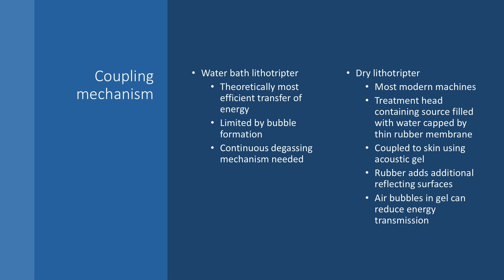There are two main types of coupling mechanism. Earlier lithotriptors, such as the EHL model Dornier HM3, relied on a water bath coupling mechanism. This is theoretically the most efficient type of coupling, as the shockwave is generated and conducted by the water directly to the patient's skin, resulting in transmission of almost all the energy into the patient. However, the energy is limited by bubble formation within the water bath, and therefore this kind of lithotriptor had a continuous degassing mechanism installed to try and remove air bubbles as they are generated.